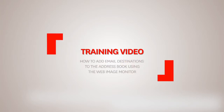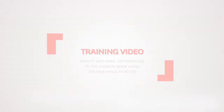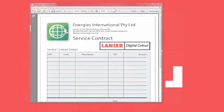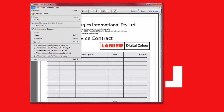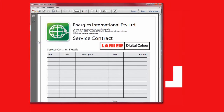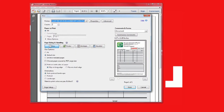Using this video you will be able to add users to the address book using Web Image Monitor. Open a file on your computer and select File, then select Print, and then select the Lanier PC L6 print driver.